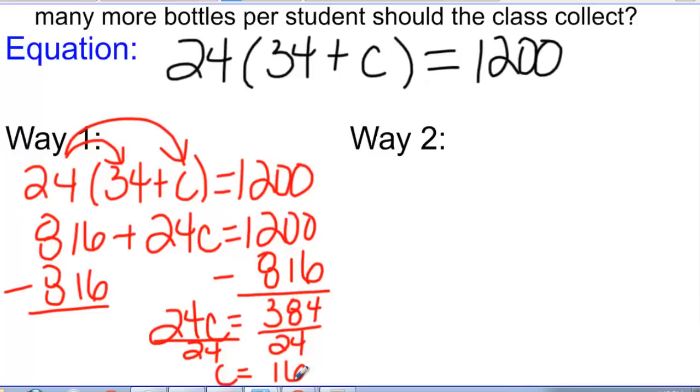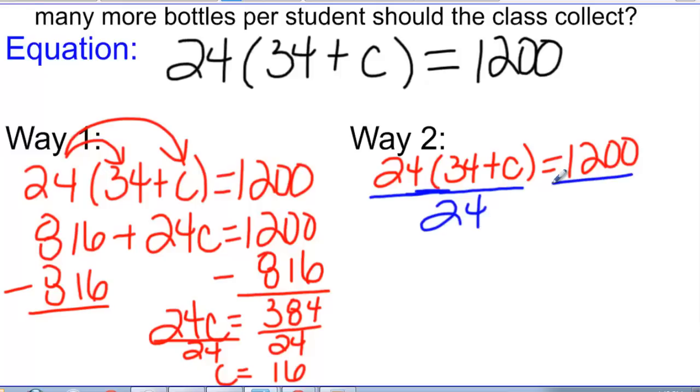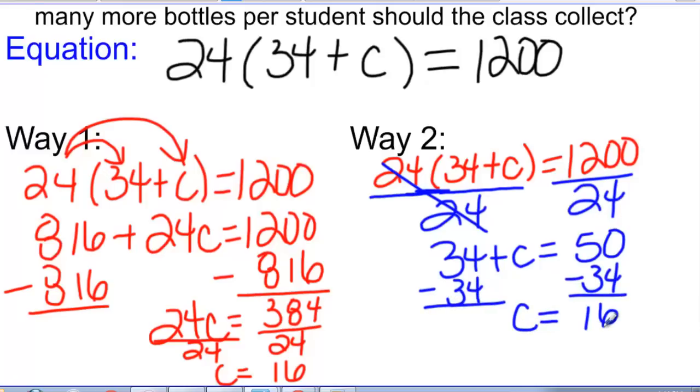The other way you can do this is to recognize that I am multiplying two things together on this side of the equal sign: 24 and whatever that is equal to. So I can think of this as being a multiplication equation. I could first undo that multiplication, and then I wouldn't have to use the distributive property. If I divide both sides by 24, my 24s cancel. I end up with 34 plus c equals 50, and then I subtract 34 from both sides. So I get c equals 16 again.